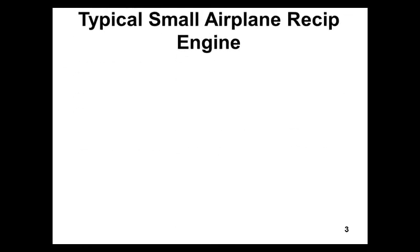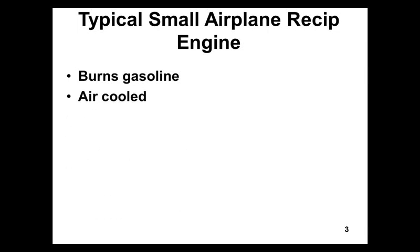A typical reciprocating engine in a small airplane — a small airplane being under 12,500 pounds — has a reciprocating engine that burns gasoline. Diesels are less than 0.1%, less than one out of 1,000. They're also air-cooled, meaning they don't have a radiator. They do not have coolant or radiator fluid. The vast majority — again 99.9% — of airplane engines are not water-cooled.